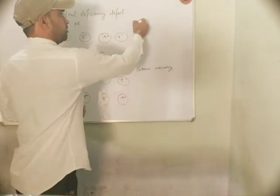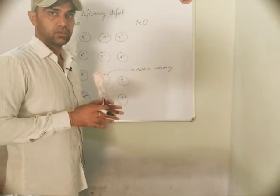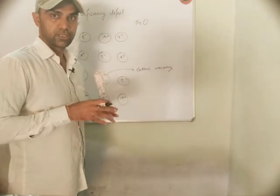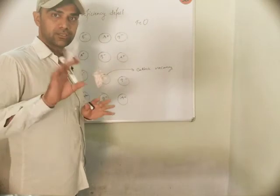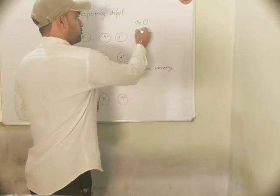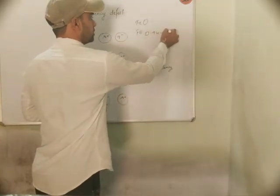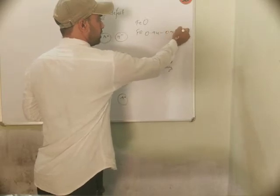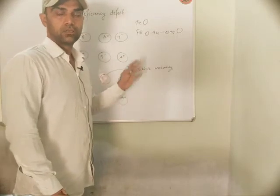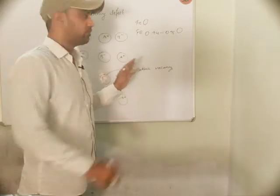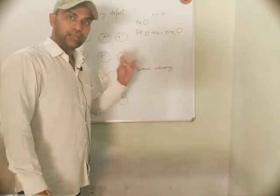Let us take the example of FeO. As I told you in the previous section, FeO's stoichiometric ratio is not 1:1 as seen in the formula. It appears to be 1:1, but practically it is not 1:1. This is a metal deficiency defect.